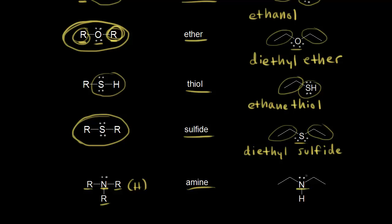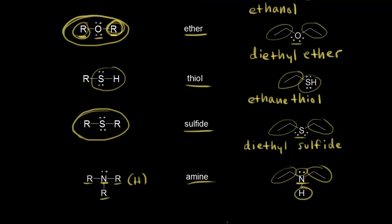We have a nitrogen with a lone pair of electrons. This one has two ethyl groups, and one of our groups here is a hydrogen. So one name for this is diethylamine. Let me write that out. You could call this diethylamine.